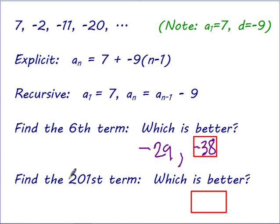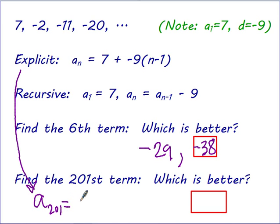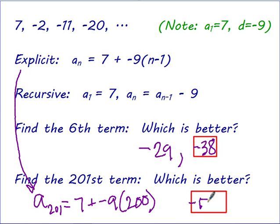But to find the 201st term, should I write out all 201 numbers? No — this is when the explicit formula comes into play. I plug in the appropriate numbers: negative 9 times 200 gives negative 1800, add 7, giving negative 1793. For far-off terms, explicit is the way to go; for nearby terms, recursive is easier.